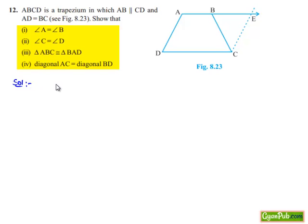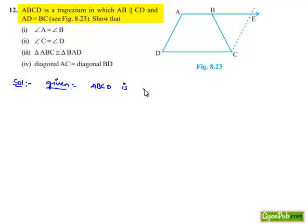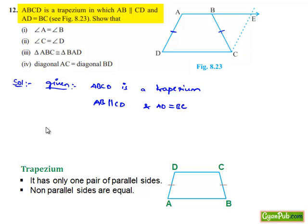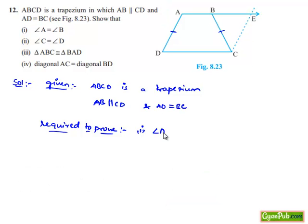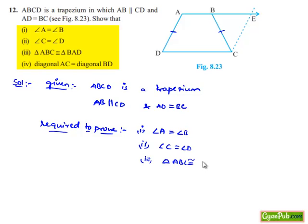Now moving on to the solution. Let us note the given information: ABCD is a trapezium in which AB is parallel to CD and AD is equal to BC. We are asked to prove: first, angle A is equal to angle B; second, angle C is equal to angle D; third, triangle ABC is congruent to triangle BAD; and fourth, diagonal AC is equal to BD.